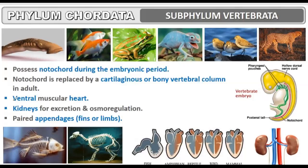The heart is muscular and is present on the ventral side. Kidneys are present for excretion and osmoregulation. Paired appendages — fins or limbs — are present. Appendages are structures attached to the body like limbs or fins. We have two arms and two legs. A fish has four fins. These are appendages and they are paired.